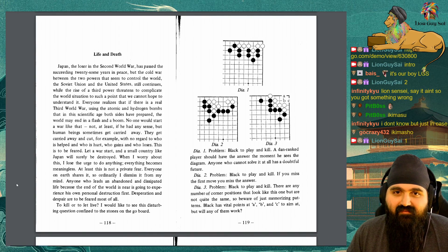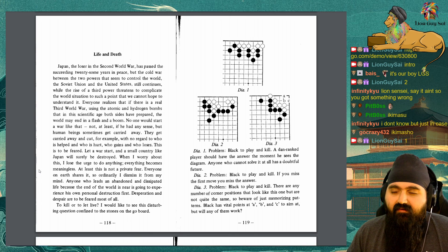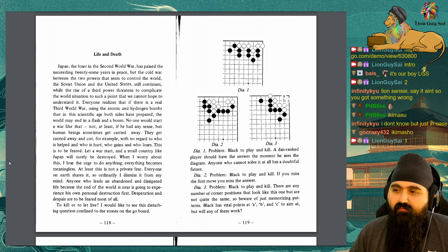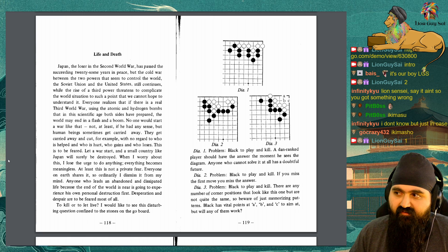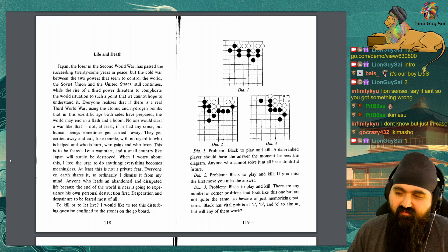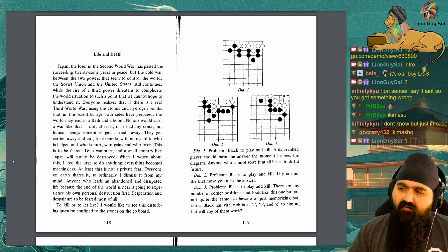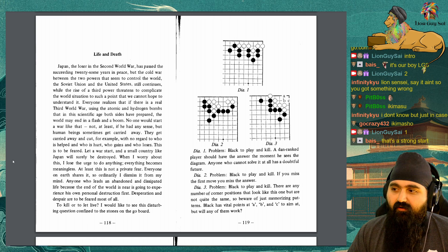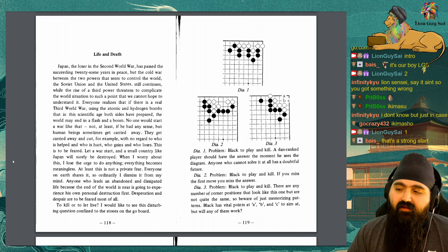Chapter 6: Life and Death. Japan, the loser in the Second World War, has passed the succeeding 20-some years in peace, but the Cold War between the two powers that seem to control the world, the Soviet Union and the United States, still continues, while the rise of a third power threatens to complicate the world's situation to such a point that we cannot hope to understand it. Everyone realizes that if there is a real third world war, using the atomic and hydrogen bombs that in this scientific age both sides have prepared, the world may end in a flash and a boom.